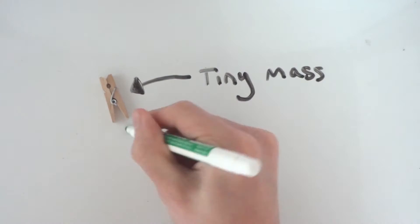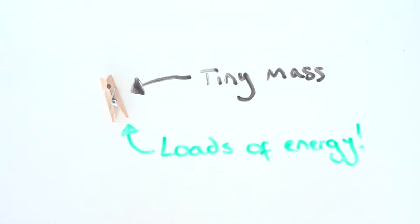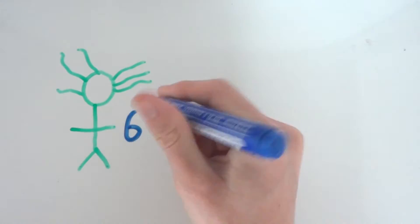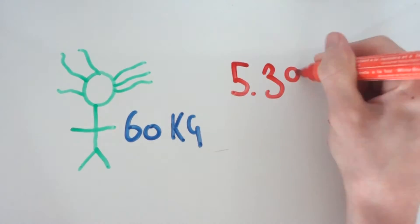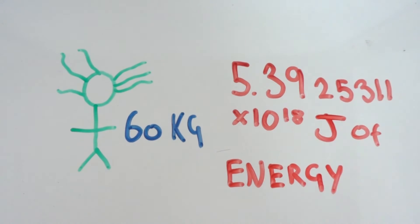The mass energy equivalent, which now has the famous equation E equals mc squared, helps show that just a small amount of matter contains a gigantic amount of energy. Because you're multiplying by the speed of light squared, just a small amount of weight, like say 60 kilograms, would have 5.39 times 10 to the power of 18 joules of energy.